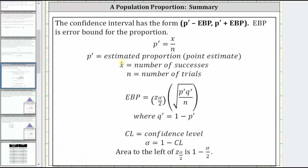P-prime is the estimated proportion or point estimate, which is equal to x divided by n, where x is the number of successes and n is the number of trials or sample size. The confidence interval is equal to p-prime minus the error bound to p-prime plus the error bound, where the error bound for the proportion is equal to the z-score that corresponds to the confidence level times the sample standard deviation for the proportion, which is equal to the square root of p-prime times q-prime divided by n, where q-prime is equal to one minus p-prime.